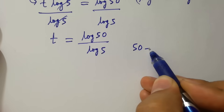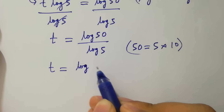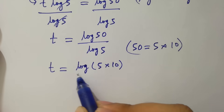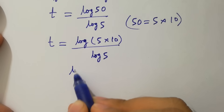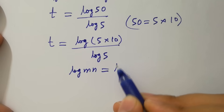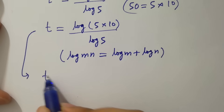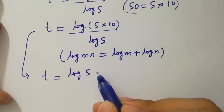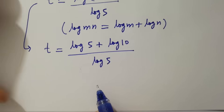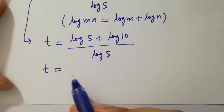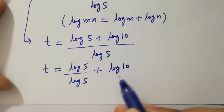Since 50 equals 5 times 10, t will be equal to log of 5 times 10 over log 5. Separate the fractions: we have log 5 over log 5 plus log 10 over log 5.